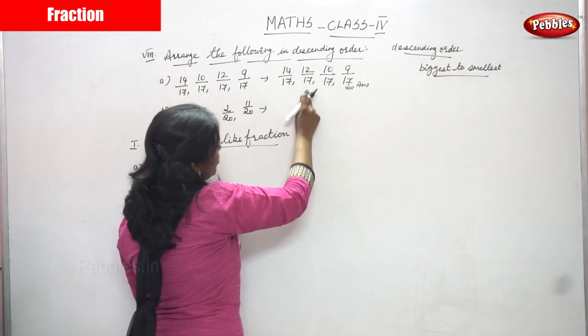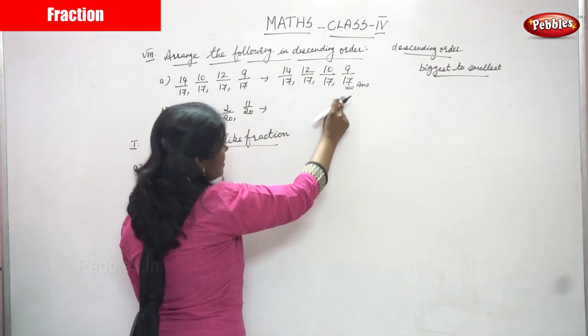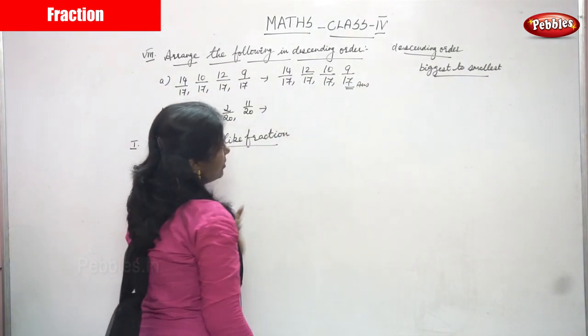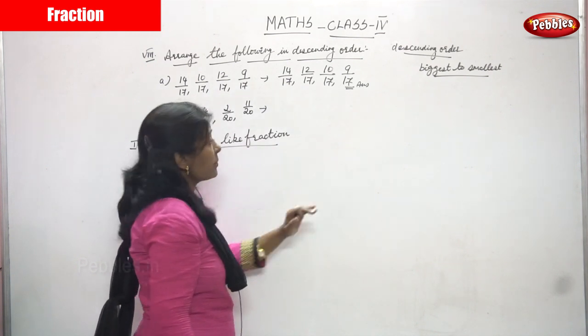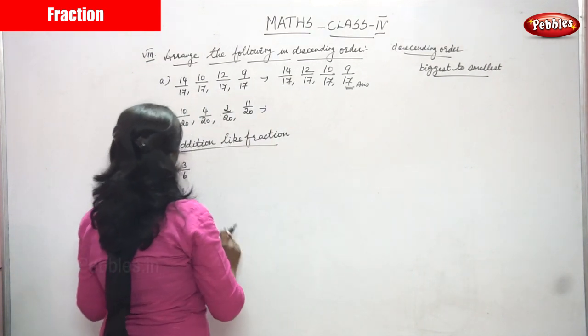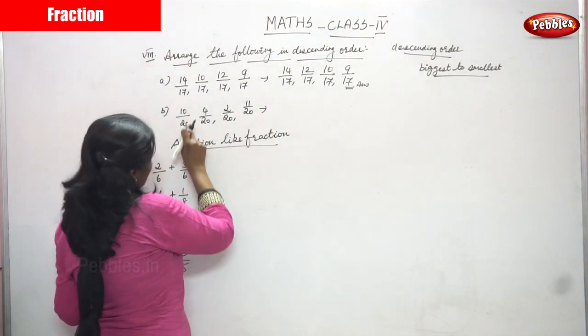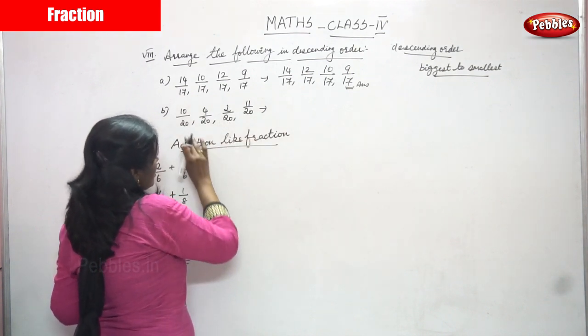So: 14 by 17, 12 by 17, 10 by 17, 9 by 17. This is the proper descending order. The answer is perfectly correct. Next problem: 10 by 20, 4 by 20, 2 by 20, 11 by 20.